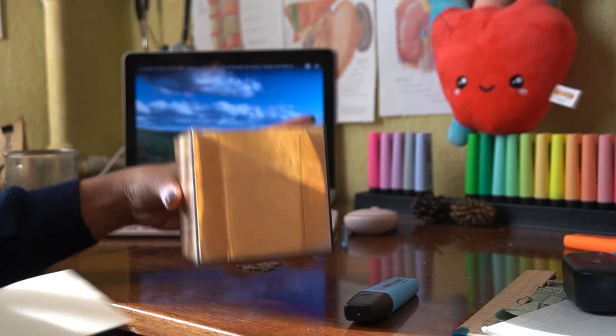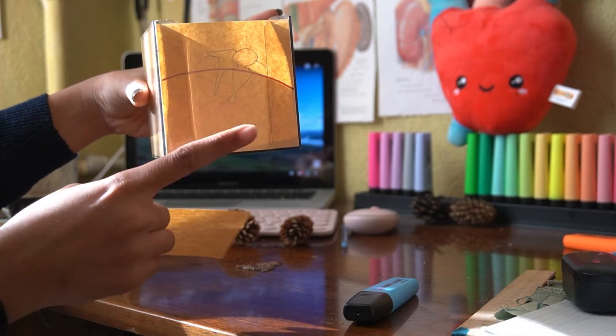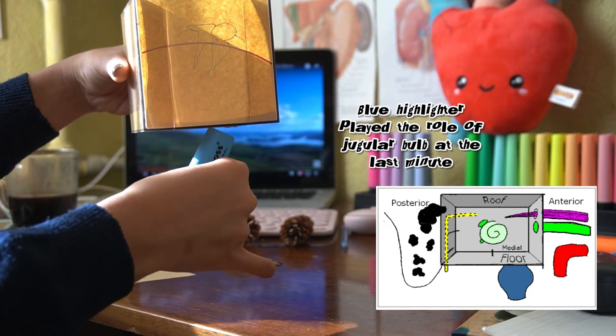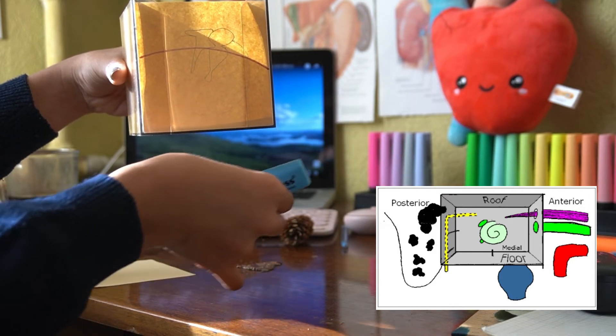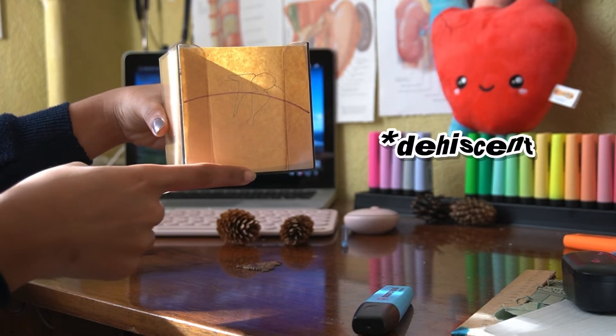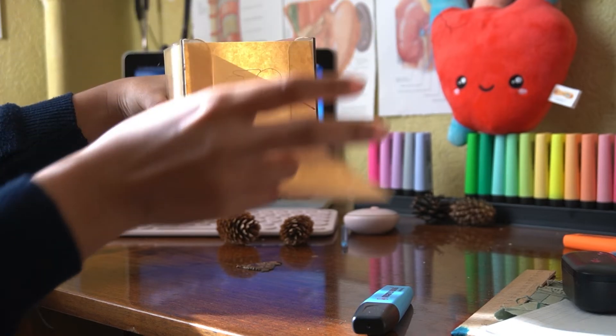The floor of the middle ear cavity is also a thin plate. It separates the middle ear cavity from the jugular bulb, and the jugular bulb traverses inferiorly. Sometimes this floor is congenitally deficient, and therefore the tympanic cavity is separated from the jugular bulb only by mucosa.